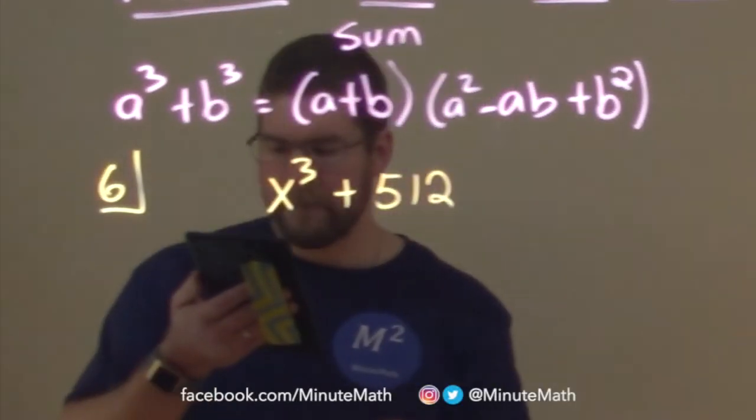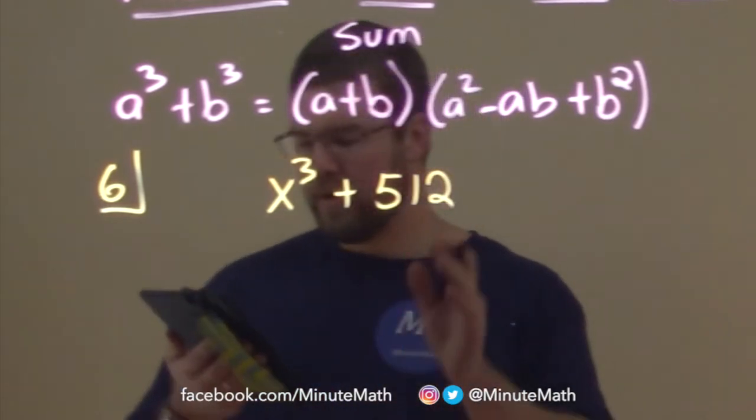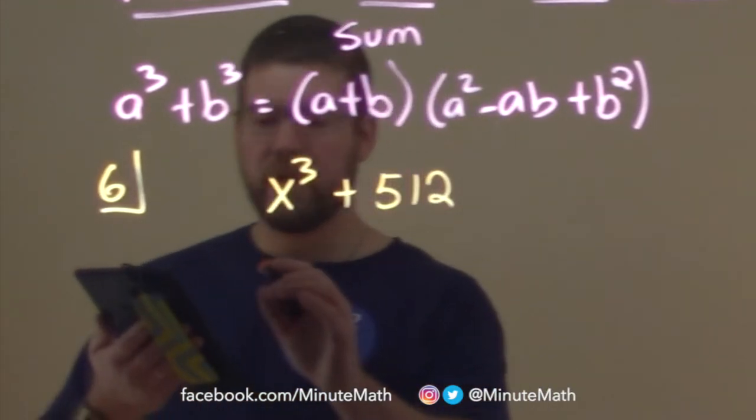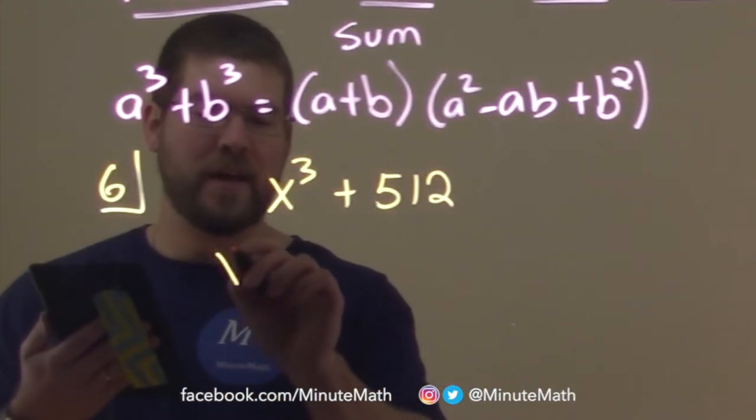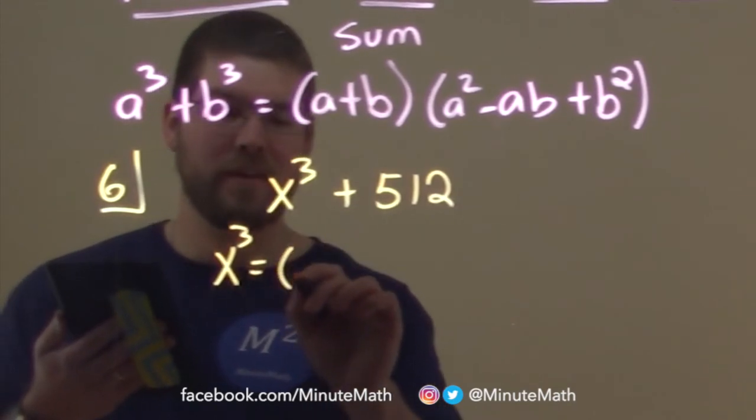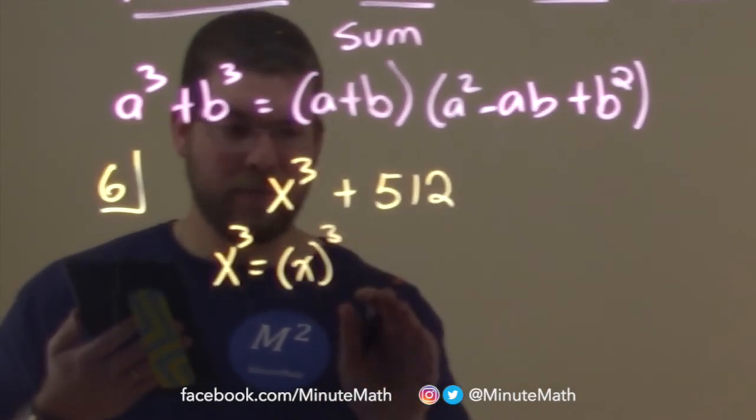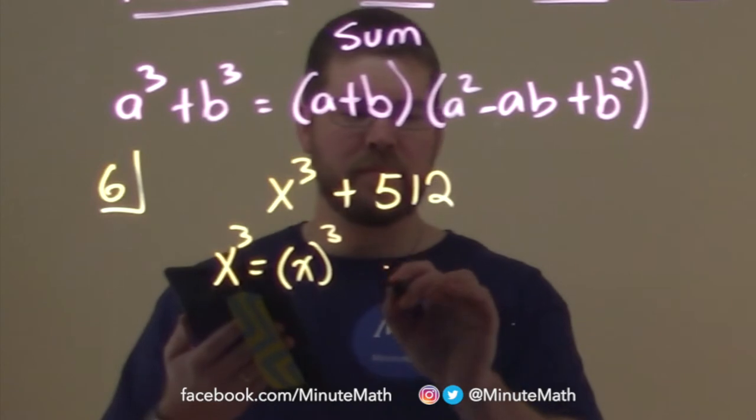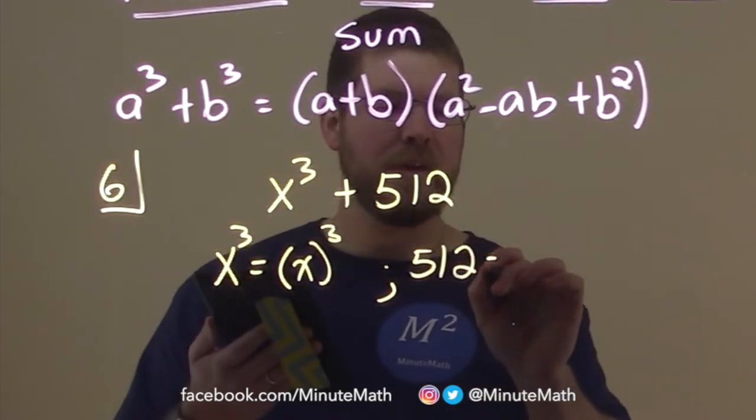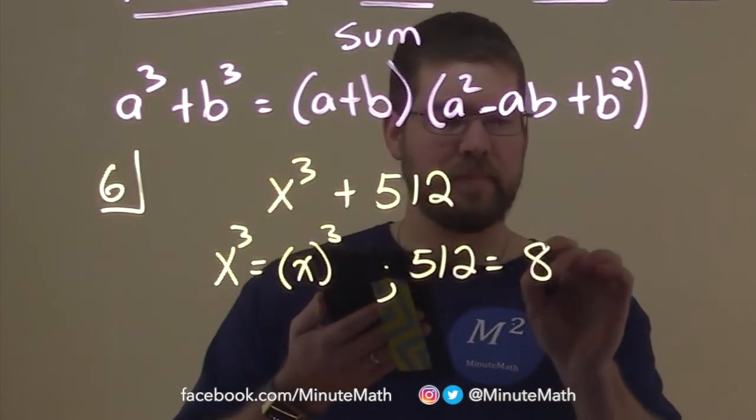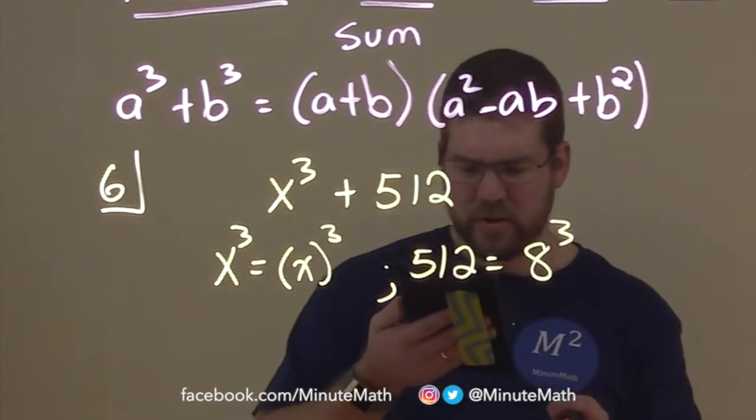Okay. Well, we know that x to the third and 512 are cubes because, well, x to the third is pretty obvious, right? x to the third is x to the third power. And 512 is 8 to the third power. Right? Yeah. 8 to the third power.